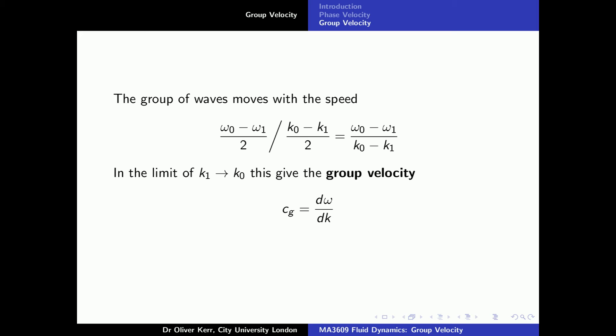If we consider k₀ to be fixed and look at the limit of k₁ tending to k₀, then this expression will tend to the derivative of omega with respect to k. This will be the speed of the groups of waves, the speed that the energy moves. This is called the group velocity. We will denote this as c with a subscript g.